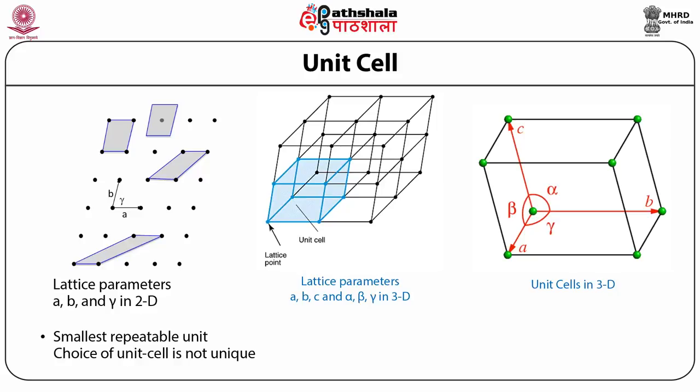The unit cell parameters for a three-dimensional unit cell are A, B, C and alpha, beta, gamma, which are the angles made by the three axes.